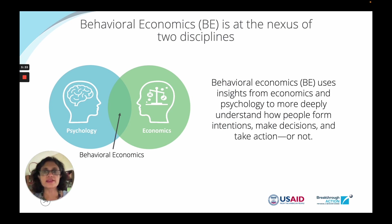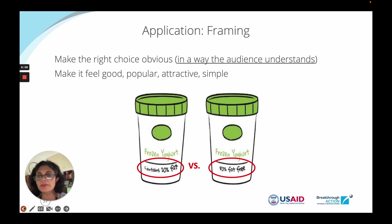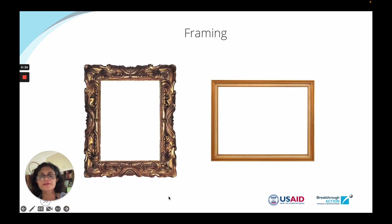I want to delve into behavioral economics here for a second because it hugely influences individual behavior. It's a discipline — an overlap between psychology and economics — that uses insights from both to more deeply understand how people form intentions, make decisions, and take actions or not take actions. When we think about the steps to behavior change, behavioral economics tends to fall somewhere after approval and before advocacy. In the intention and practice phase is where the behavioral economics principles really strongly come into effect.